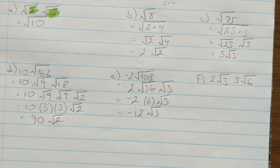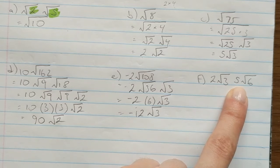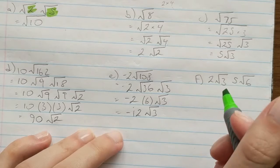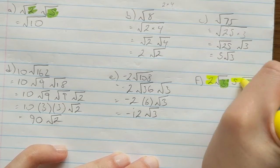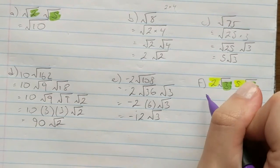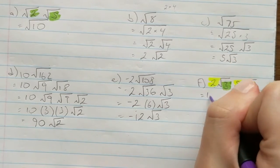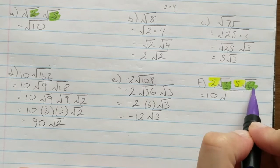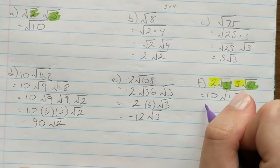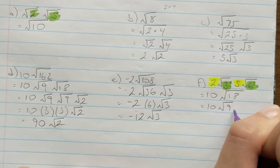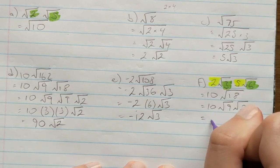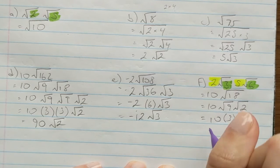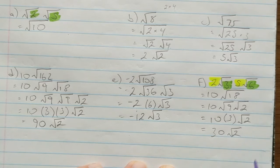Now: 2√3 × 5√6. We have two roots beside each other so we multiply the numbers inside, but we also need to multiply the numbers on the outside. 2 × 5 = 10, and 3 × 6 = 18, giving us 10√18. Since 18 = 9 × 2, we have 10 × √9 × √2 = 10 × 3 × √2 = 30√2.